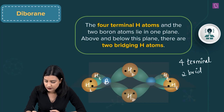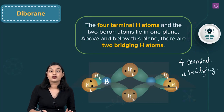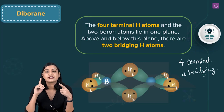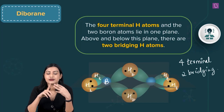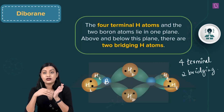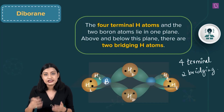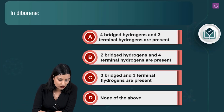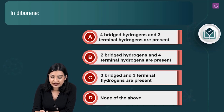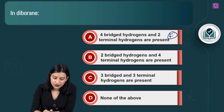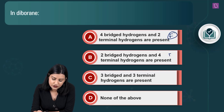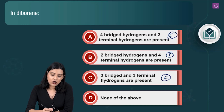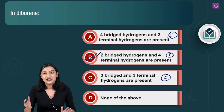So diborane has four terminal B-H bonds and two bridging B-H-B bonds (three-center two-electron / banana bonds). These names are all tested in competitive exams. Option A ('four bridged, two terminal') is false; option B ('two bridge, four terminal') is correct — option B is the right answer.